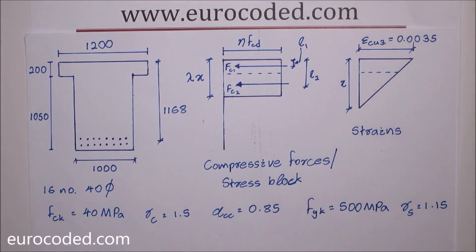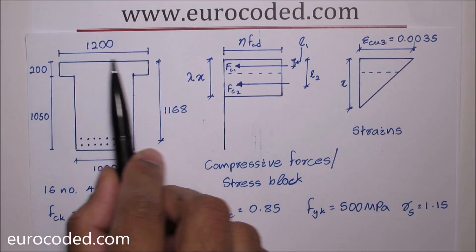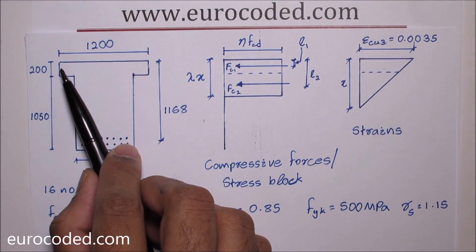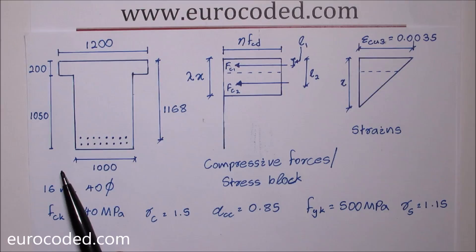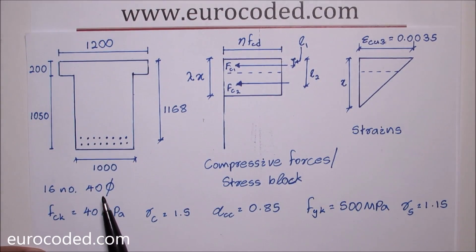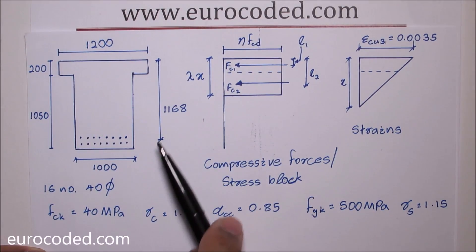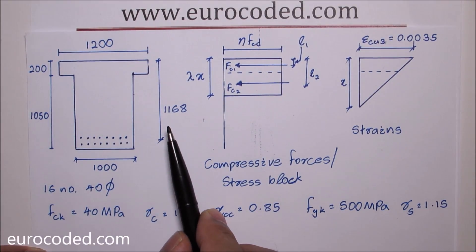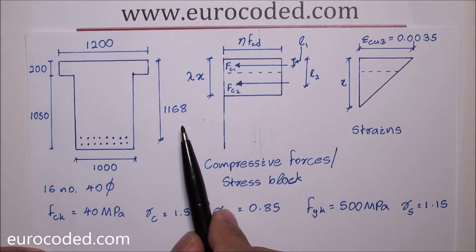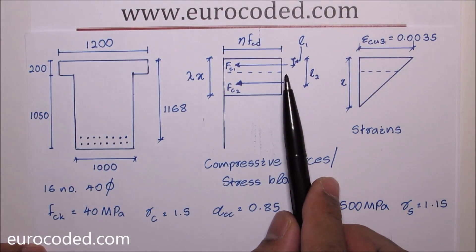I've already drawn my cross section. As you can see, the top flange width is 1200 millimeter and is 200 millimeter deep, and our web is one meter wide and 1050 millimeter deep, and we are using 16 number 40 mil diameter longitudinal reinforcement. I have already calculated our effective depth which is 1168 millimeter.